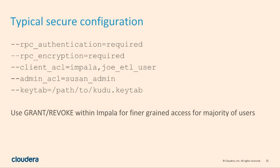To give you the quick overview of how you'd configure this, you basically need to set five flags: you need to say you want to require authentication, require encryption, set these users as clients — so Impala can access the data and enforce its own permissions — maybe give Joe's ETL task a service account user, give Susan admin ACL, and then give it a keytab. This is all you need to do to set up security. Everything is encrypted and secure after that. You can then use normal commands like grant and revoke within Impala to get more fine-grained access.